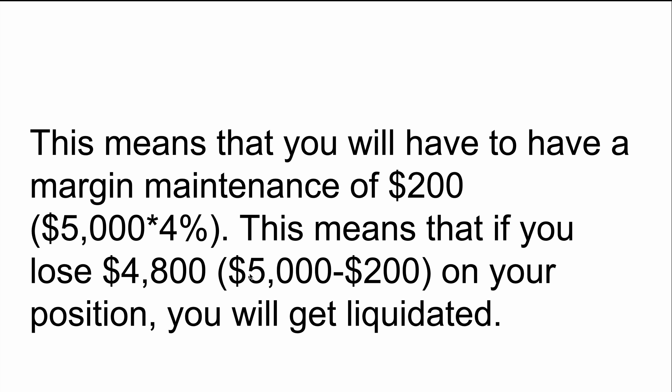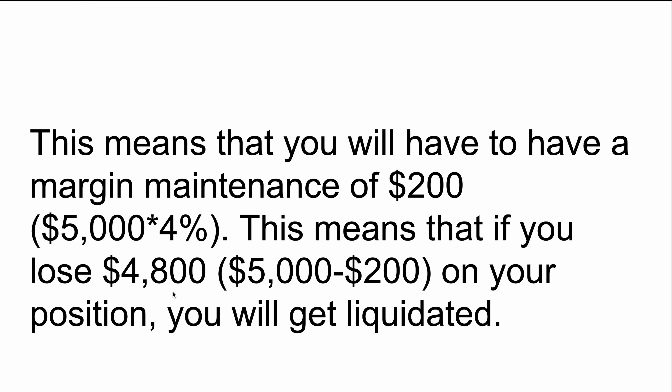What happens is you only have $5,000 and as the value of your assets gets close to that $5,000, Binance or whichever exchange wants to make sure that you've got enough to pay off your outstanding debt. That's why they'll liquidate you just slightly above a one-to-one asset-to-debt ratio.